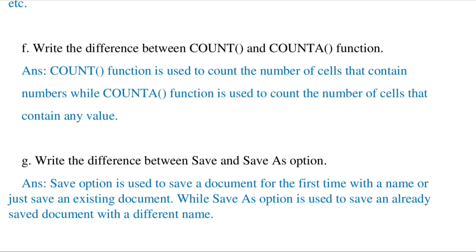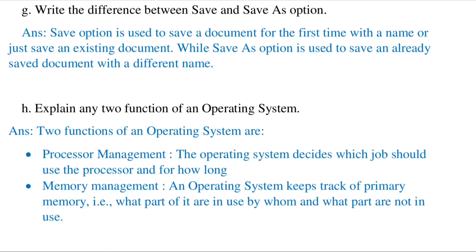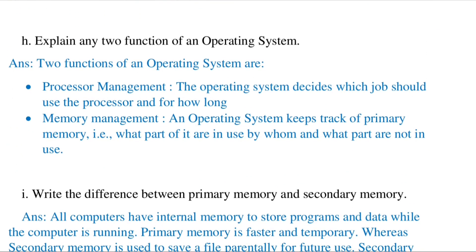Two functions of an operating system: process management and memory management. List the difference between primary memory and secondary memory. Primary memory is much faster, secondary memory is slow. Primary memory is small in amount, but secondary memory is large in amount.